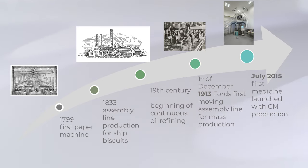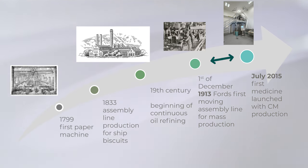Looking again at cars, at first they had no seat belts and not even decent roofs. Now we have side and front airbags and driving assistance systems to help us stay safe. So while in other industries there was a lot of progress with regards to the method of production, in the pharmaceutical field it took until 2015 for the first product to be launched using continuous manufacturing technologies. There was a huge gap.